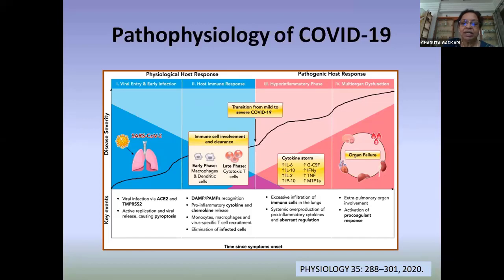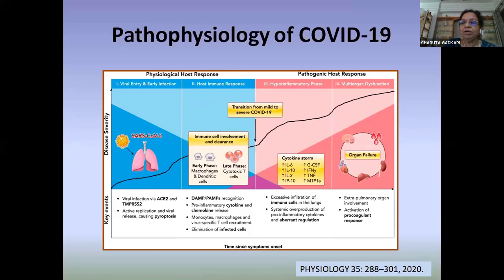Once the virus enters the cell, it starts replicating, viral material is released, and it causes pyroptosis. The cell dies and the released virus is available to infect the next host cell. The body then understands this and launches an immune response.